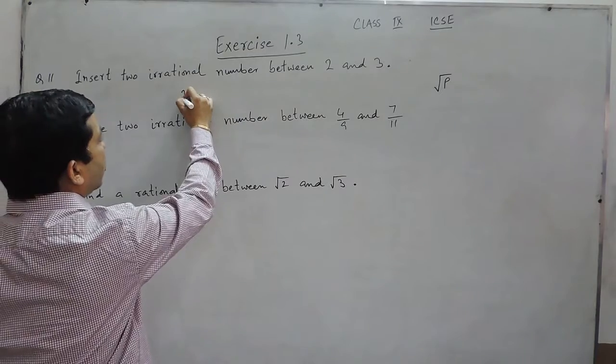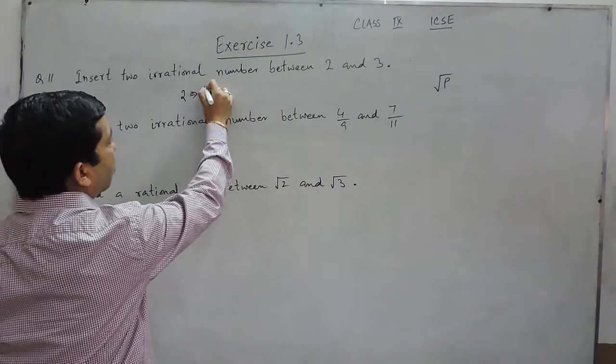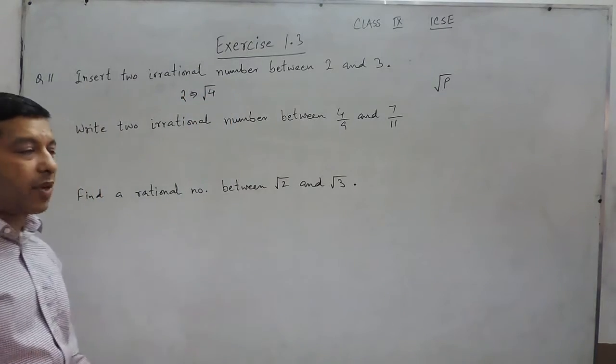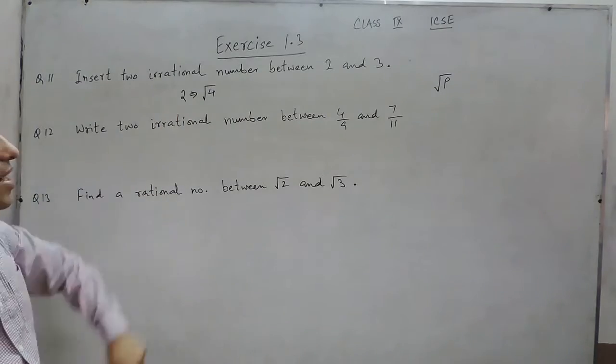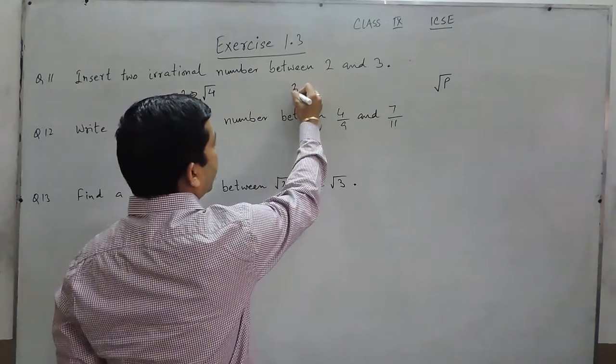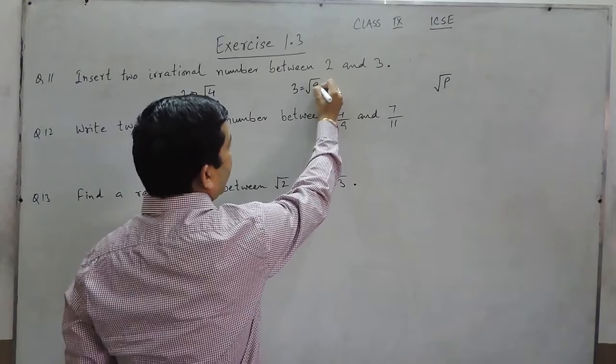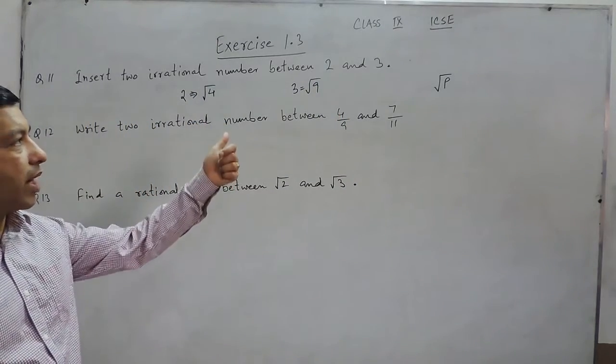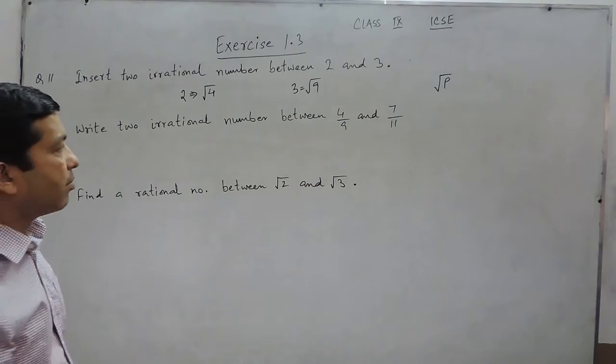When I am talking about 2, so 2 can also be written as under root of 4. As 4 is a perfect square, so this is a rational number. When I talk about 3, so this is under root of 9. Because 9 is also a perfect square, that is why 3 is a rational number.